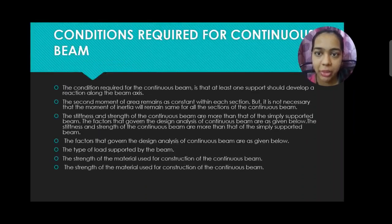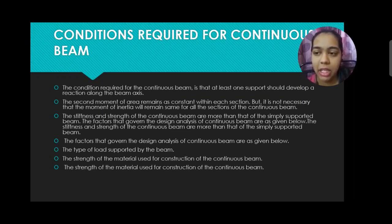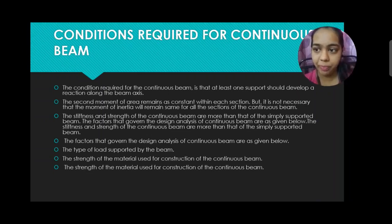Conditions Required for Continuous Beam: The condition required for the continuous beam is that at least one support should develop a reaction along the beam axis. The second moment of area remains constant within each section, but it is not necessary that the moment of inertia will remain the same for all sections of the continuous beam. The stiffness and strength of the continuous beam are more than that of the simply supported beam.